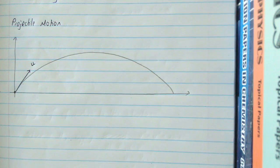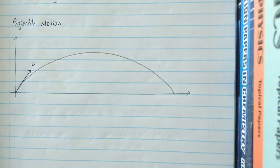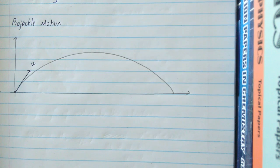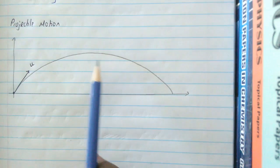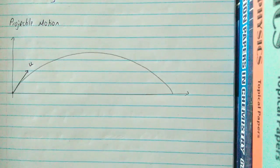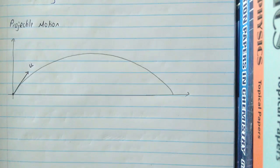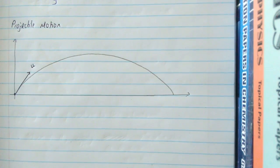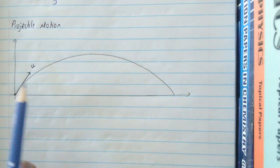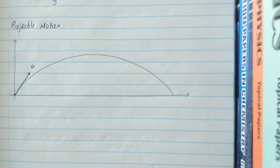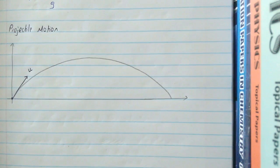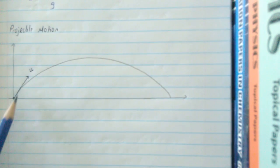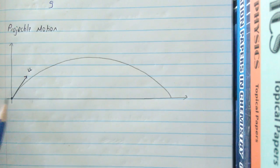Projectile motion essentially consists of an object which is thrown either from ground level or from a higher level, and it falls back to the ground and the trajectory is a parabola. The object is thrown initially with an initial velocity denoted as u. To tackle projectile motion problems we have to consider either the vertical component or the horizontal component at a time, and we apply our vector resolution to break down velocity u into a horizontal component and a vertical component.